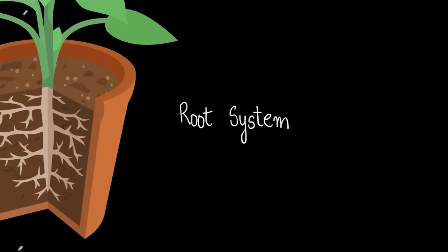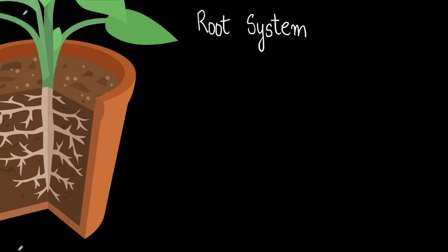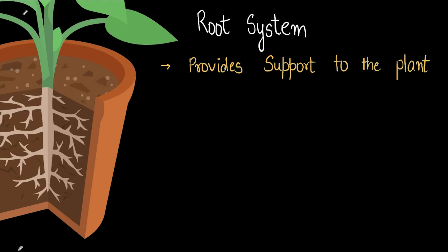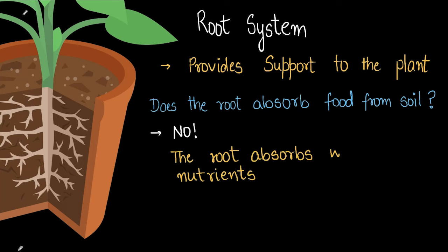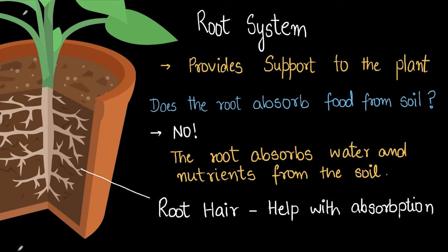Everything below the ground is the root system. Roots provide support to the plant — without them, the plant cannot stand upright. The root absorbs water and nutrients from the soil, but it does not absorb food from the soil. It's the leaf that makes food for the plant, not the roots. Do you see these tiny hair-like structures on the root? They're called root hairs, and they help with absorption — absorbing nutrients and absorbing water.